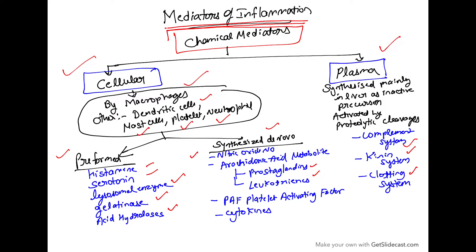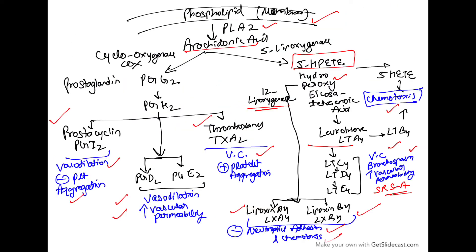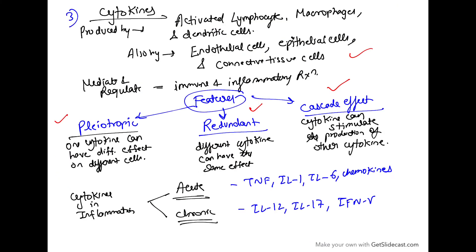Continuing with our class on mediators of inflammation, we have already discussed the cellular mediators, including the preformed cellular mediators and the synthesized de novo cellular mediators, in which we have already discussed nitric oxide and arachidonic acid metabolites.